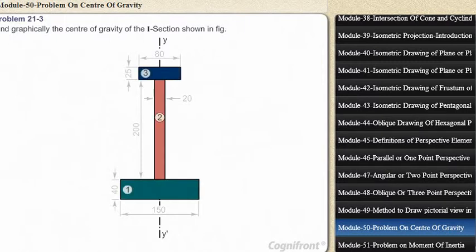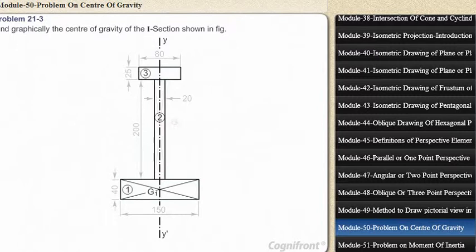Divide it into three rectangles 1, 2, and 3, and locate their centers of gravity G1, G2, and G3 respectively at the points of intersection of their respective diagonals.